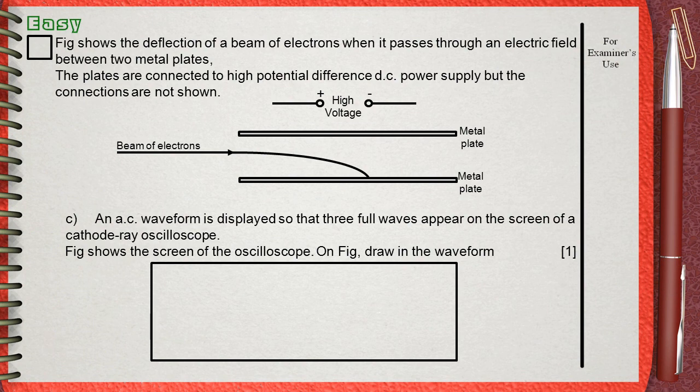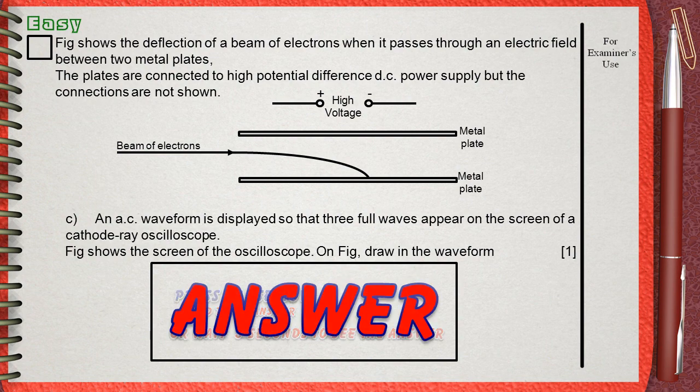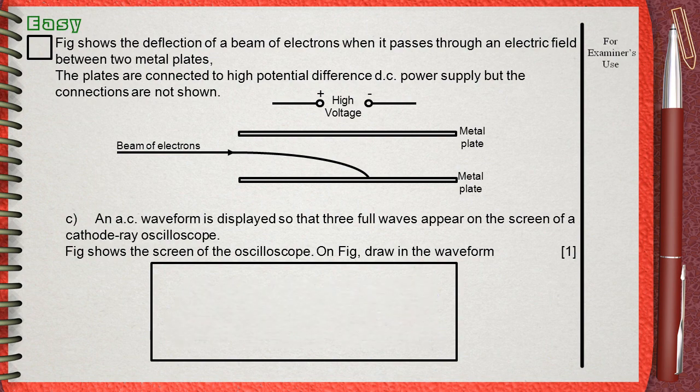Question C. An AC waveform is displayed so that three full waves appear on the screen of a cathode ray oscilloscope. The figure shows the screen of the oscilloscope. In this question, we are asked to draw three full waves in this area, which represents the screen of the CRO.